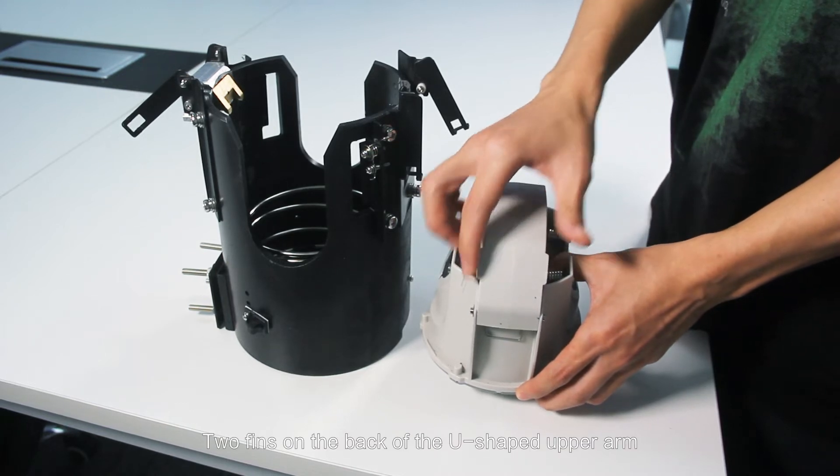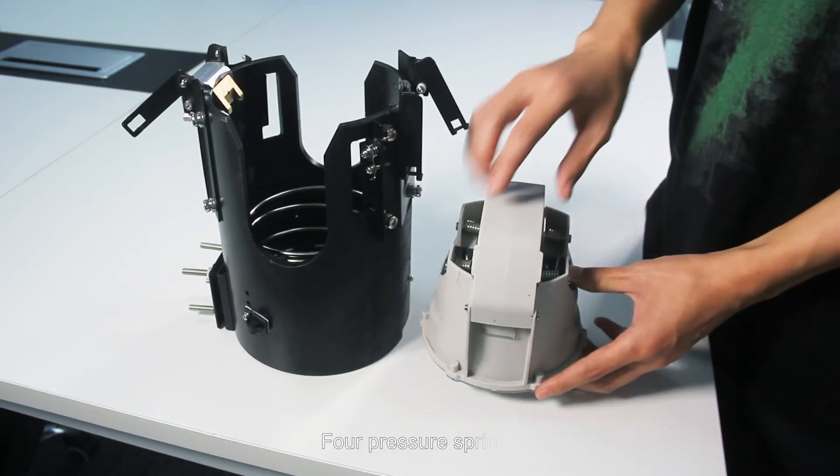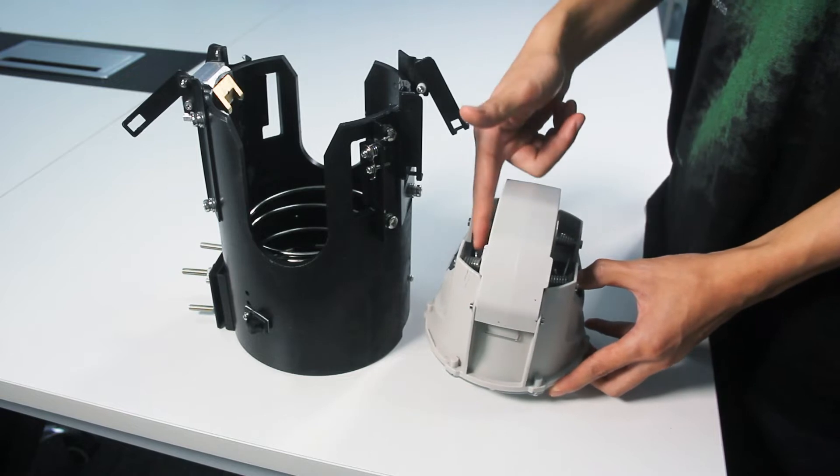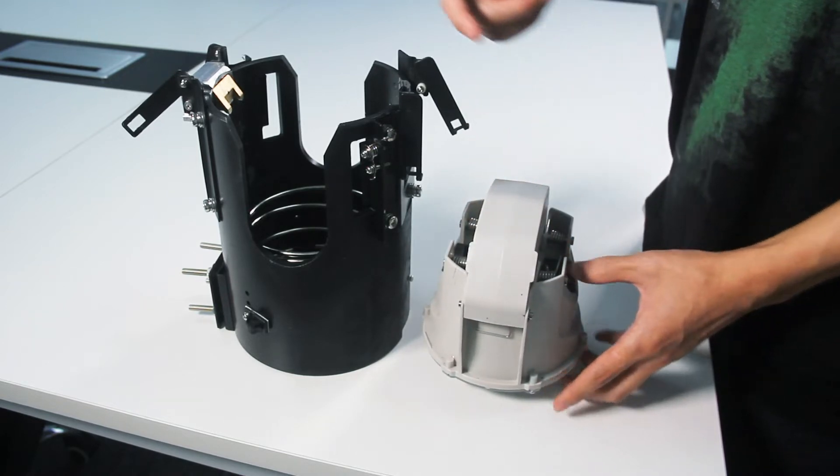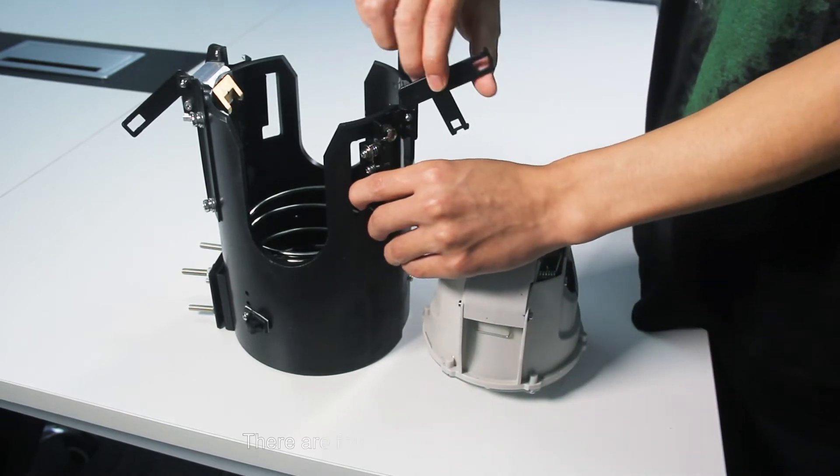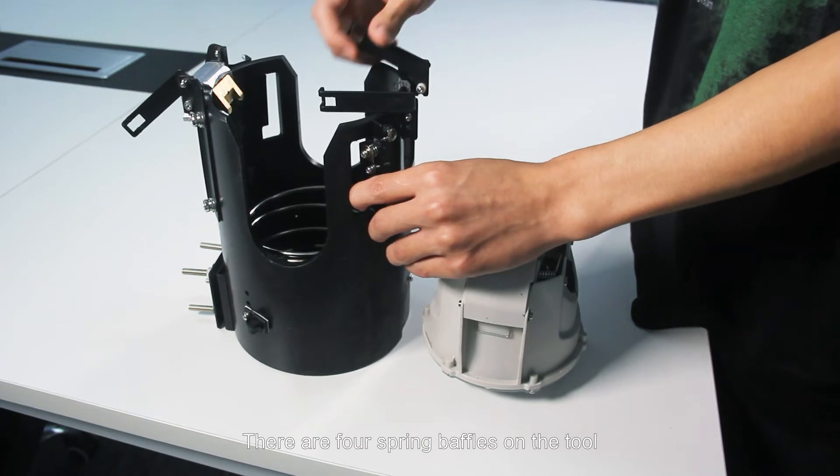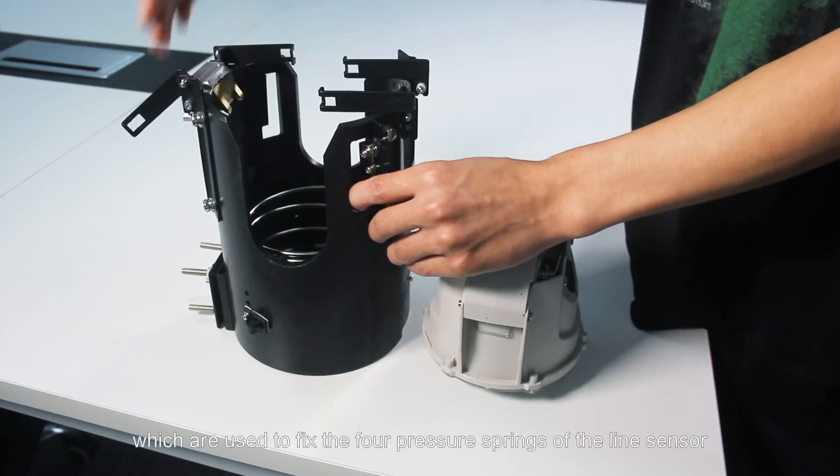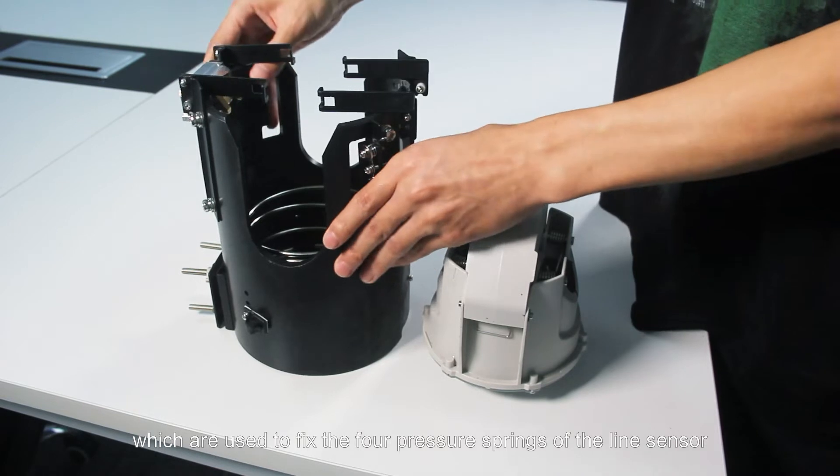Two fins on the back of the u-shaped upper arm. Four pressure springs. There are four spring baffles on the tool which are used to fix the four pressure springs of the line sensor.